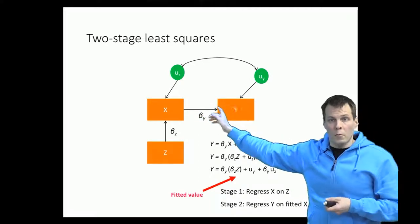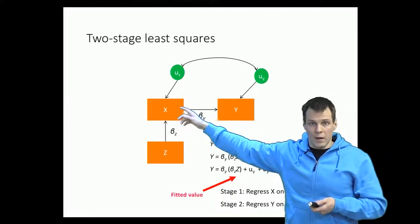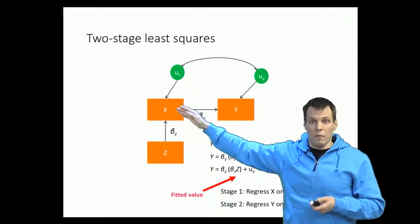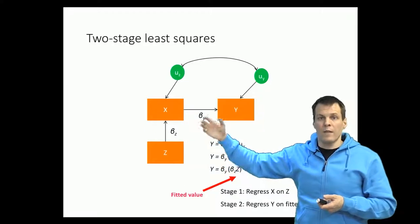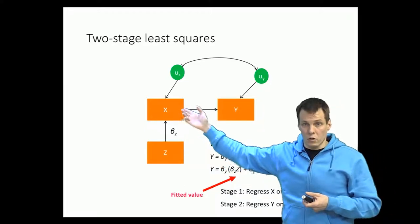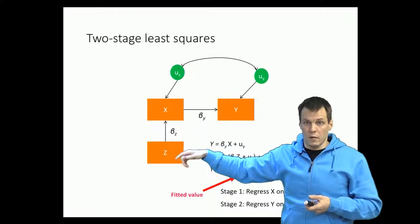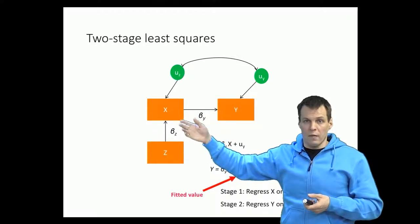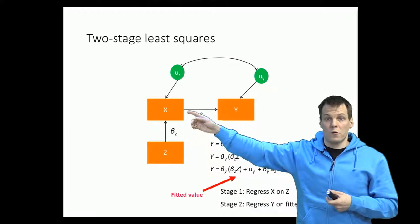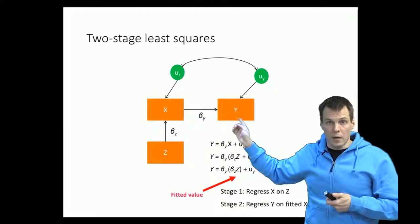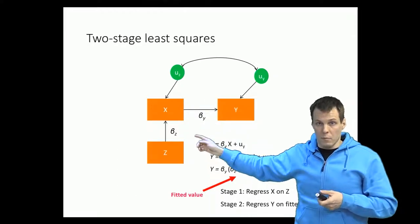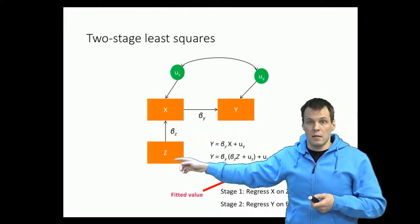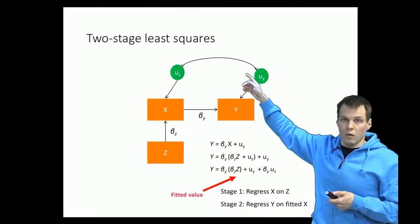If we have more than one independent variable — say five — then we regress each of those five variables on the instruments separately. If some variables are not endogenous, they qualify as instruments themselves. We take the fitted values from each of those five regressions and use those fitted values to explain y. That produces consistent estimates of beta under the assumption that z is relevant and does not correlate with the omitted causes of y.